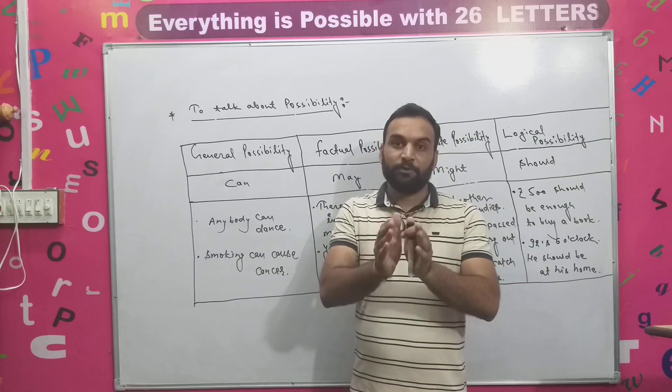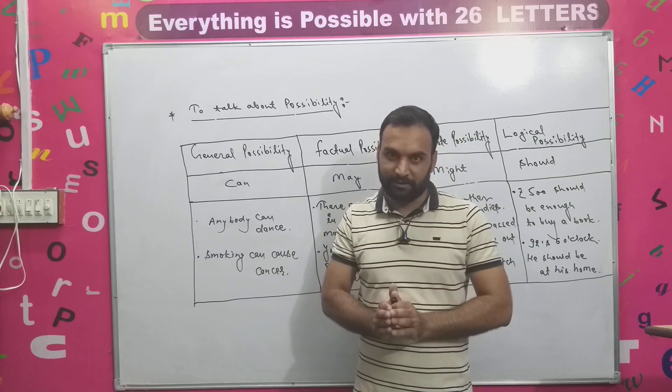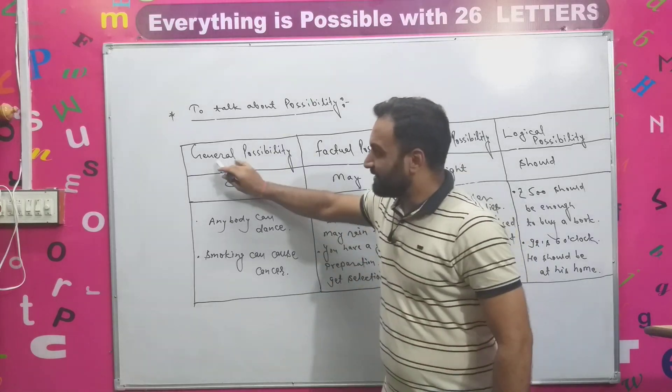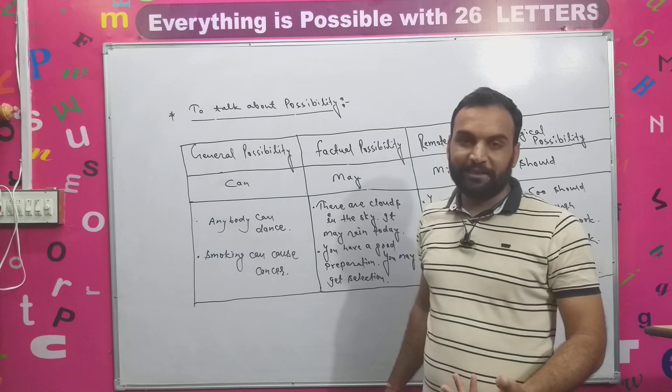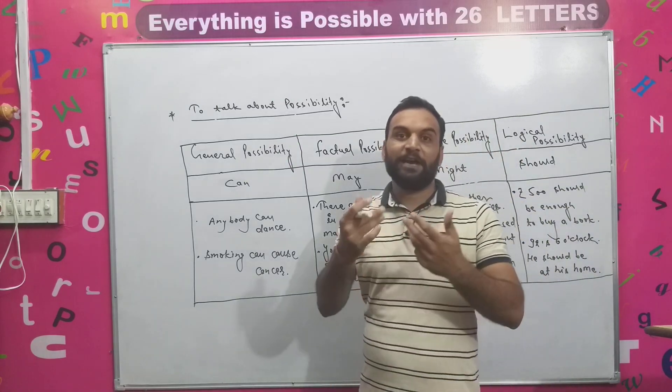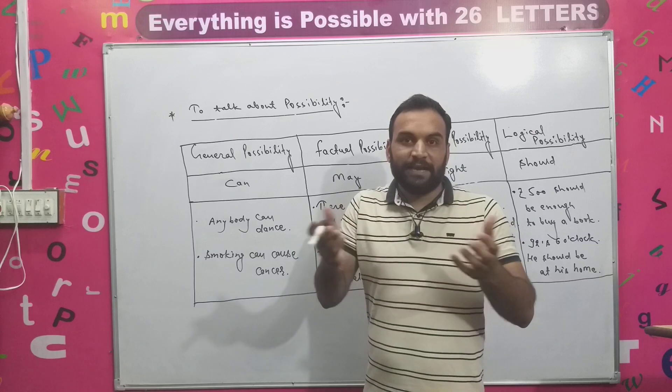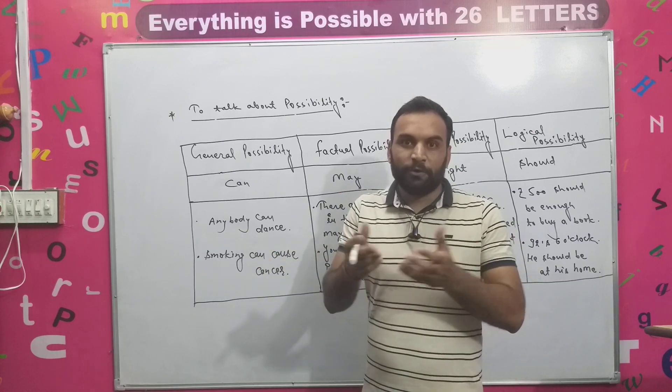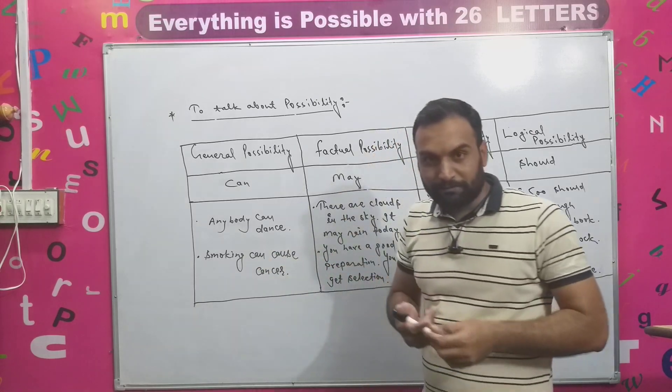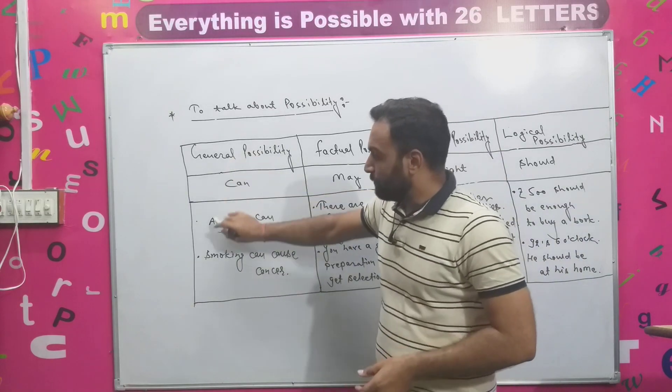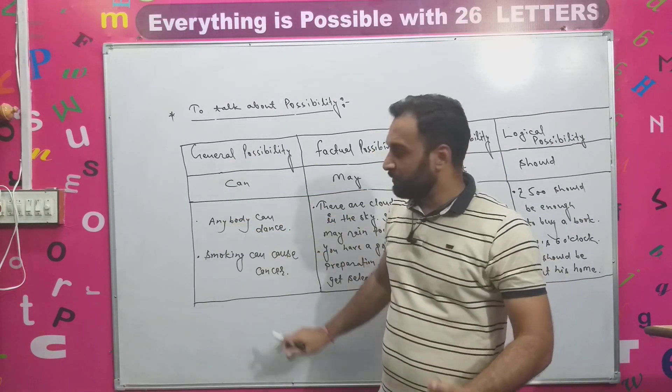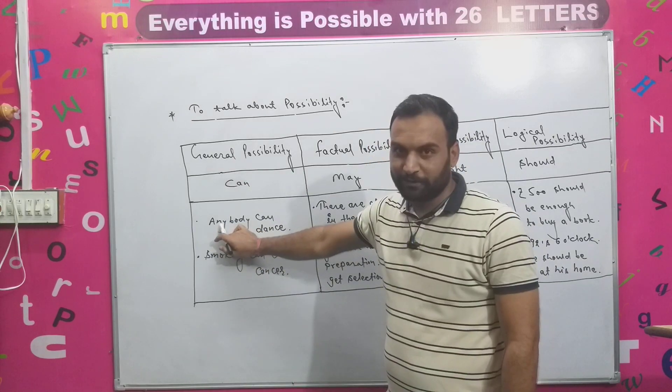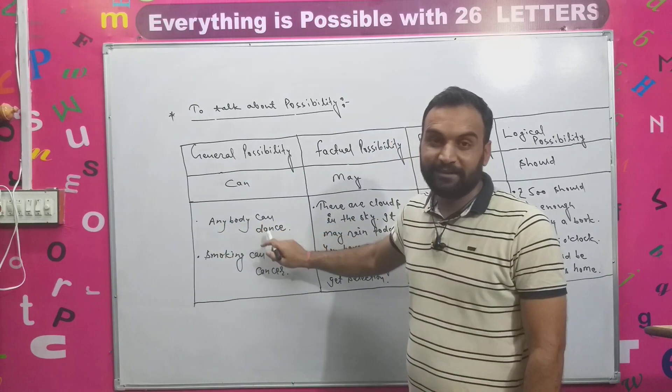So let's take the use of general possibility, Samanya Sambhavna. I mean, this is a problem that is not such a good way of being, so that it's not possible. So if you can do this play, you can see the movies. I mean, there is a very good example, ABCD, where a movie was a dance movie. So if we can talk about it, then what was the sentence? Anybody can dance.